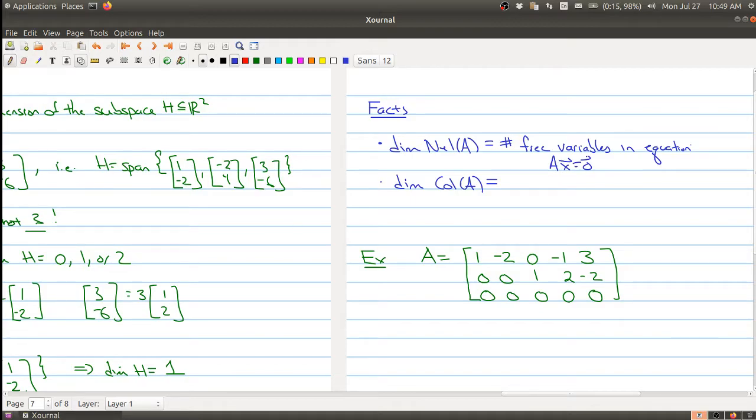But the column space also has that information, the number of basis elements is also in the reduced row echelon form. And so the dimension of the column space is the number of pivot columns of A.